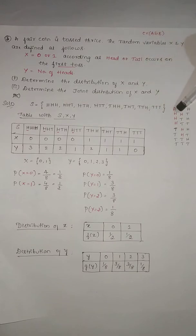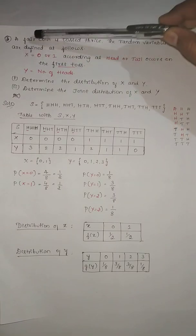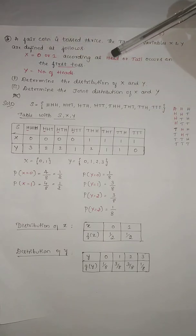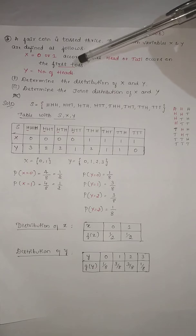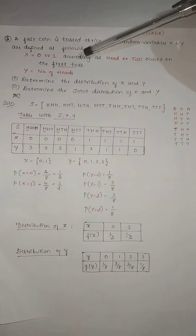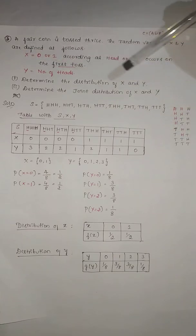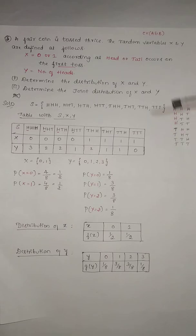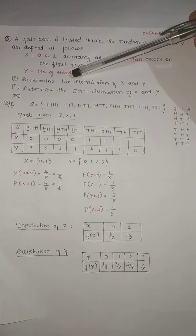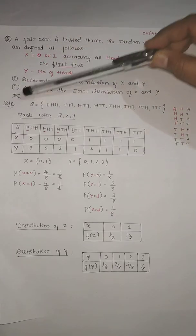After writing the sample space, observe the random variables X and Y. X is equal to 0 when head occurs on the first toss, and X is equal to 1 when tail occurs on the first toss. Y represents the number of heads. Using this data we need to find the distribution of X and the distribution of Y.